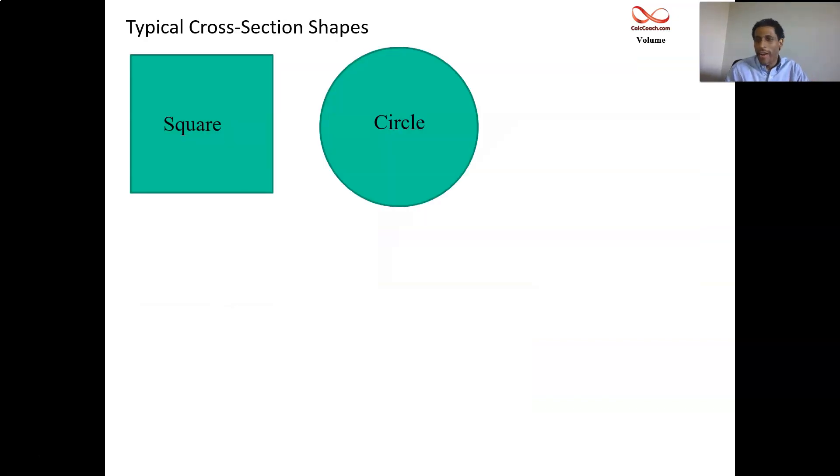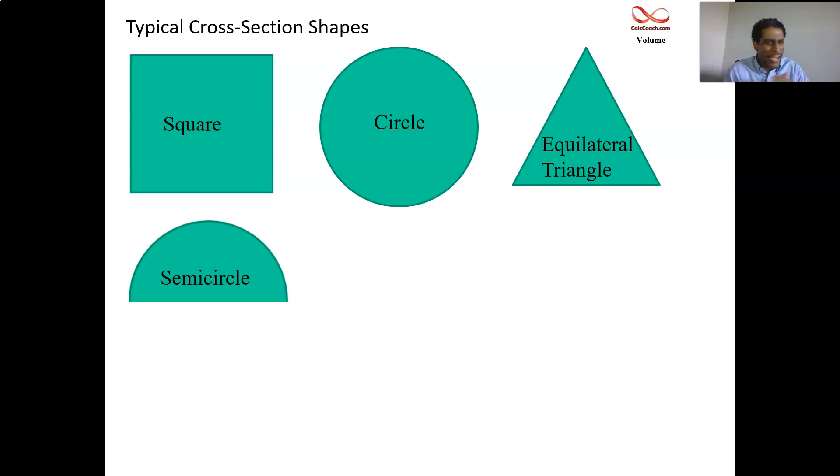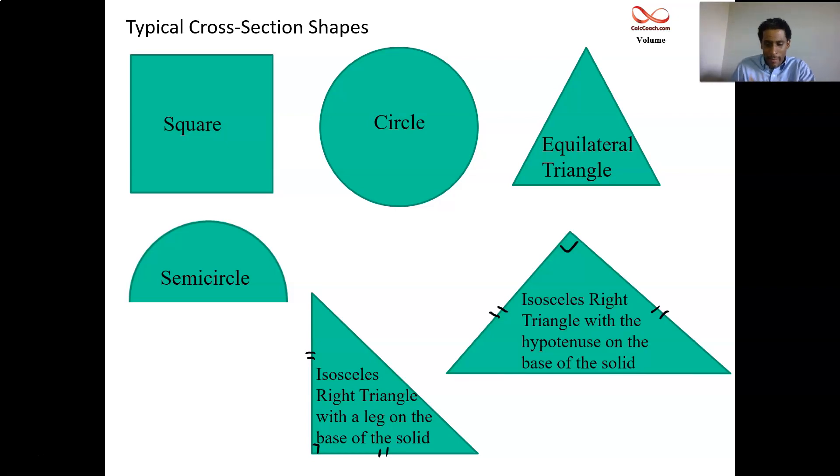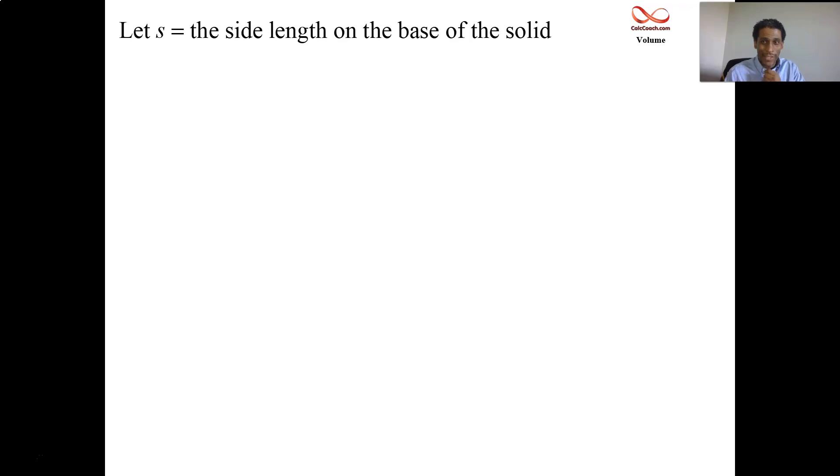So we'll go through it quickly on the next few slides. I know you know how to find the area of a square, circle, equilateral triangle, semi circle, isosceles right triangle. Maybe you could take that isosceles right triangle and turn it so that the base is actually the hypotenuse and not one of the legs. And so let's go find some formulas for these guys, where s is going to represent the slice along the base.